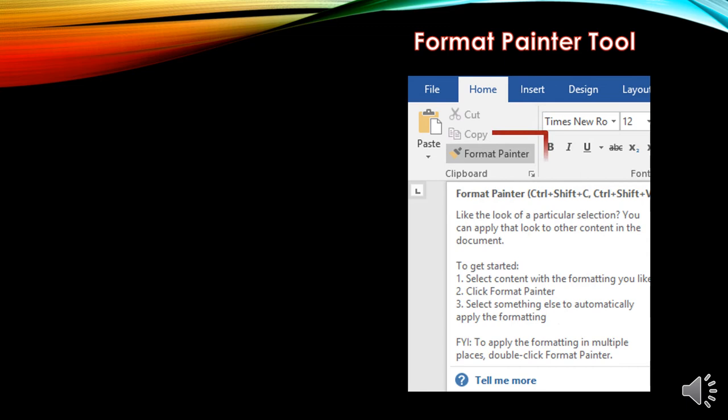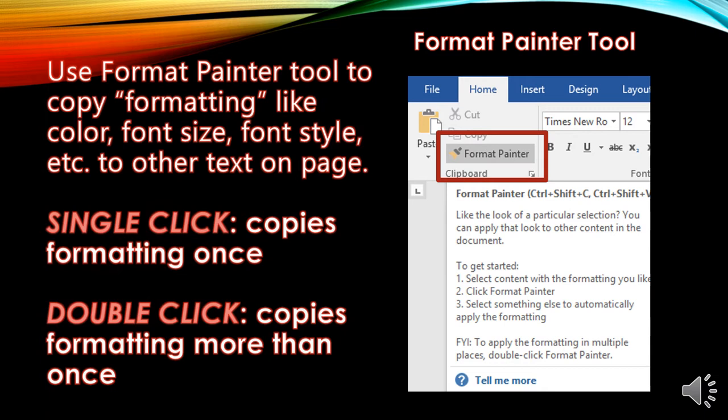The Format Painter tool is a great tool to know how to use. It is located on your Home tab underneath the Clipboard ribbon. The Format Painter tool is used when you want to copy formatting like color, font size, and font style to text on a page. If you single click on it, it copies formatting once. If you double click, it copies formatting more than once. To exit, hit Escape on your keyboard.